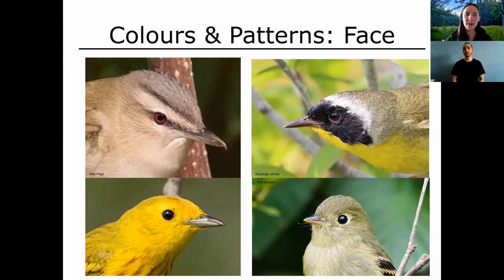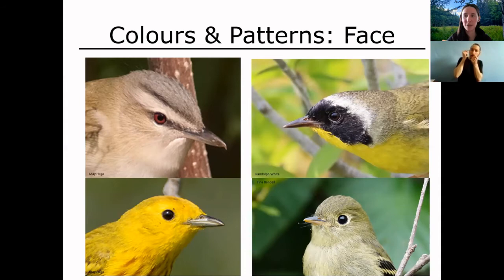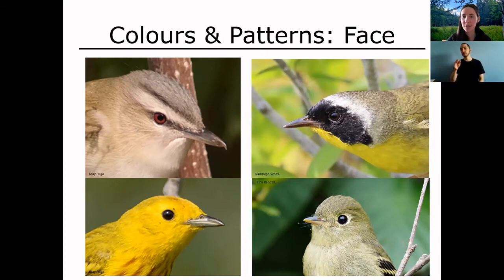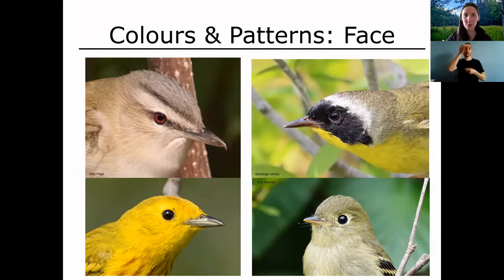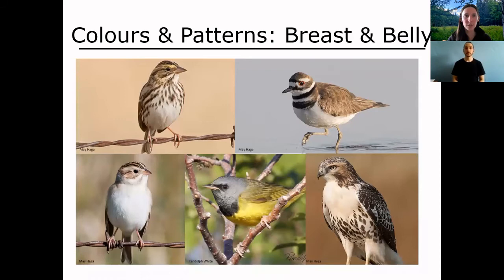Look at the colors and patterns overall on the bird, and also narrow in on key features, starting with the face. On the face you can have lines through the eye — going all the way to the back of the head, right up to the beak, or only partway. They can be strong or faint. You can also have a plain face with no features at all, like on the Yellow Warbler — that in itself is a feature. You can also have bold colors, or a ring around the eye that can be wide and bold, small, or incomplete.